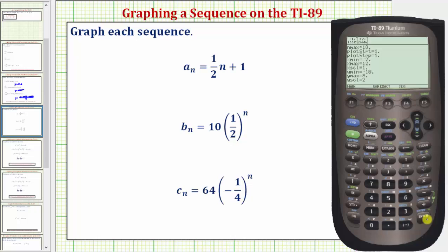Let's change the y scale to two though. Enter. And now let's graph the sequence. Diamond F3. And here are the terms of the sequence.